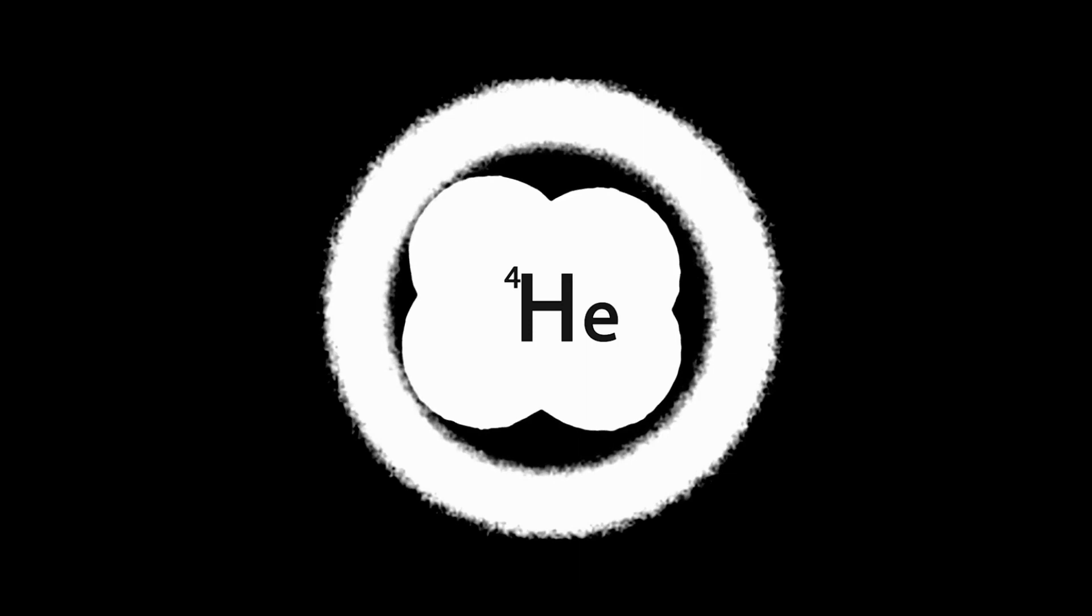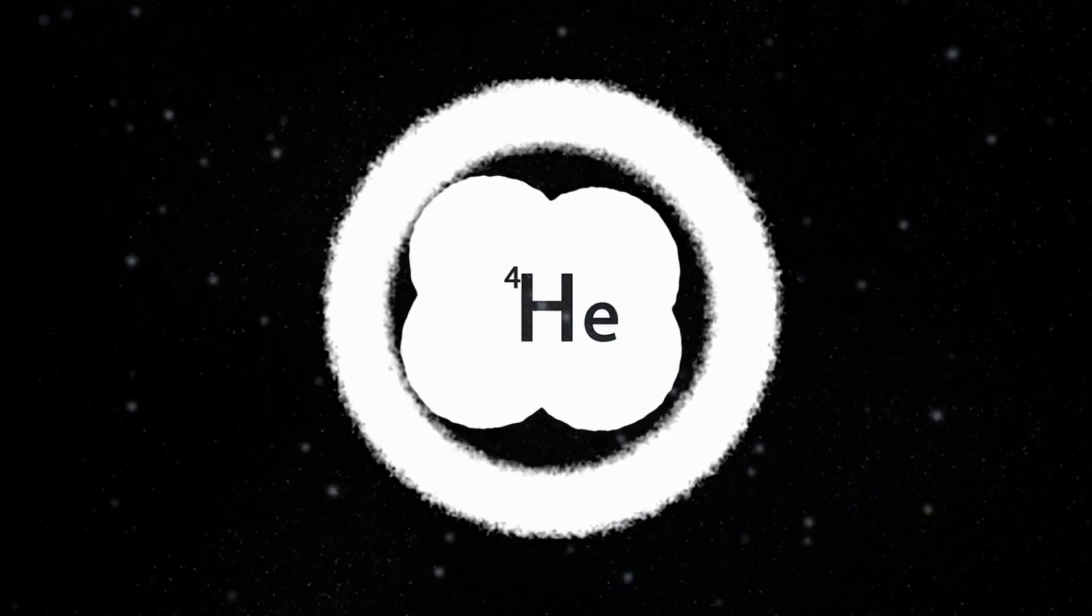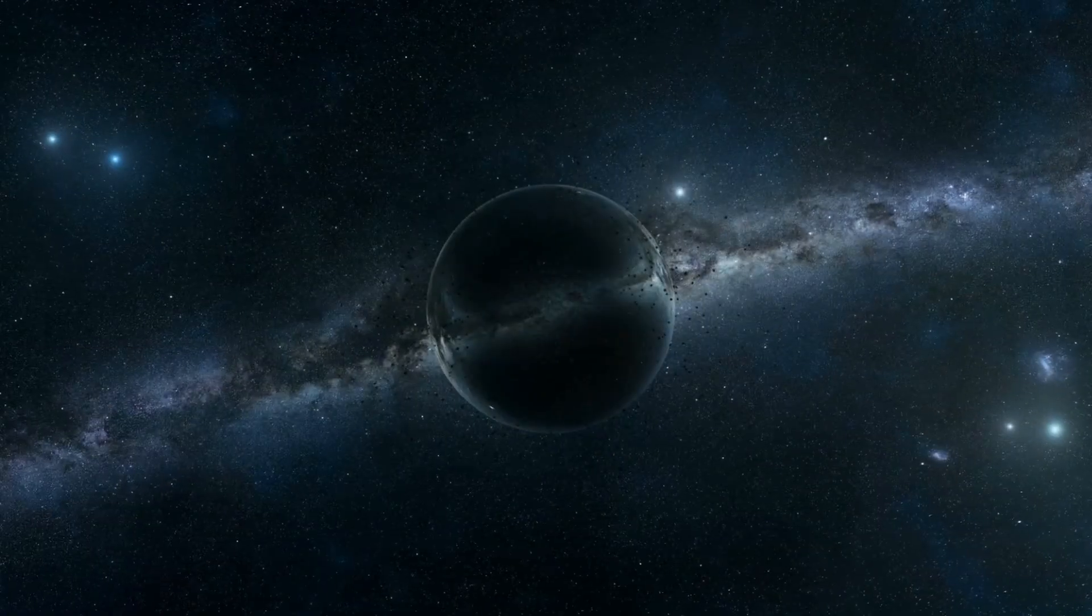Scientists know how much normal matter is in the universe from calculations of the early universe where the first hydrogen and helium formed, and there simply isn't enough normal matter to make all the dark matter astronomers have observed. That's where Hawking came in.